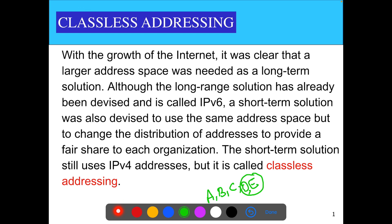With the growth of the internet, it was clear that a larger address space was needed as a long-term solution. Although the long-range solution has already been devised — called IPv6 — a short-term solution was also devised to use the same address space but change the distribution of addresses to provide a fair share to each organization. This short-term solution still uses IPv4 addresses, which we call classless addressing.